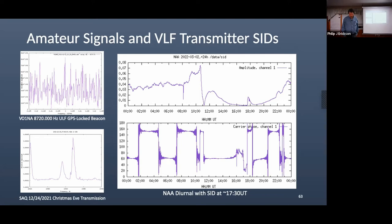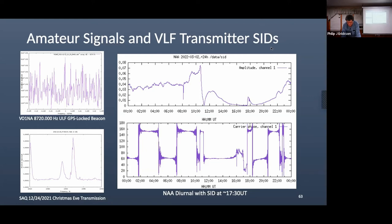This is an example of data that Jonathan and Nathaniel have collected with their system. In the middle there's a spike — a GPS-locked beacon someone is running at just under 9 kHz. This was them receiving the Christmas Eve transmission just this past December 24th. This is 17.2 kHz — and there are the sidebands of the CW signal being transmitted by SAQ. And over here there's something else — an SID, which I won't explain right now.